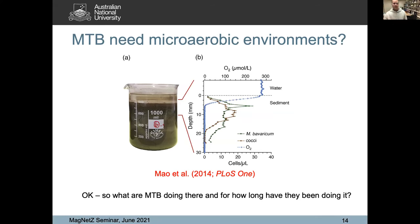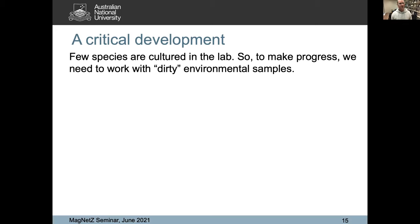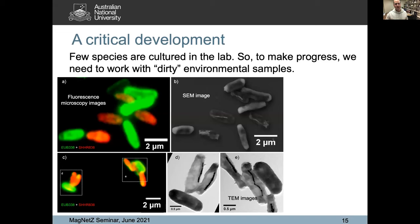So what are the bacteria doing there, and for how long have they been doing it? The problem when we come to do this sort of work is that there are really very few species that are cultured in the lab — only three or four or five. To make progress, we need to work with dirty environmental samples where you've got hundreds or thousands of species in the same sample. So how do you handle them?